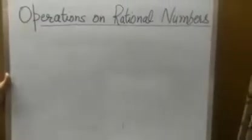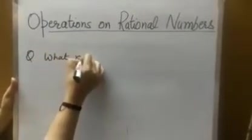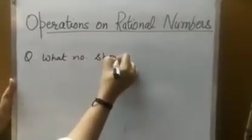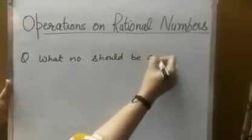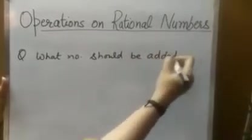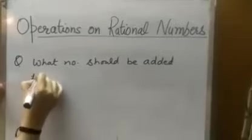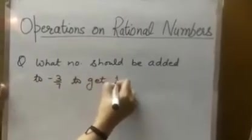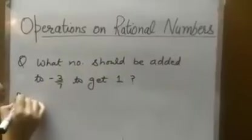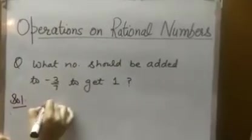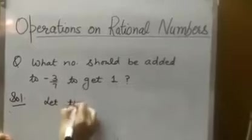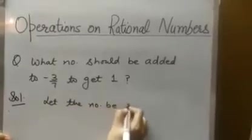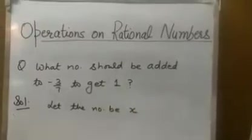Next question: what number should be added to minus 3 by 7 to get 1? Solution to this: we don't know that number. Let the number be X. We can do this question by two ways.